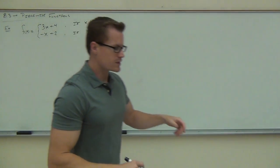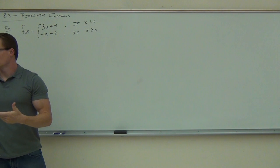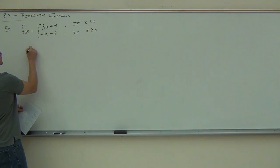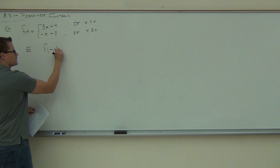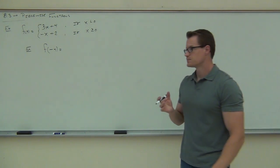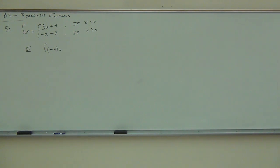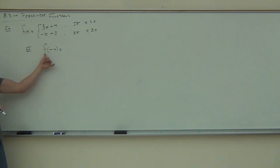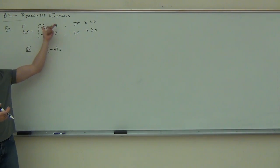How do you plug in points if we have two functions? Well, this tells you what to do. Let me give you an example. Let's say I asked you to find f of negative 4. Of course, f says we're looking for the function f. The question is: which one do I plug it into? Do I use the top one, the bottom one, or both?